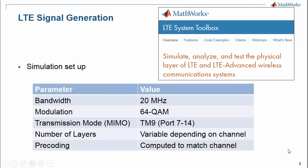We generate a 20 MHz LTE signal with 64 QAM modulation, non-codebook-based MIMO transmission mode 9, and we adjust the number of layers and the precoding depending on the propagation channel characteristics.